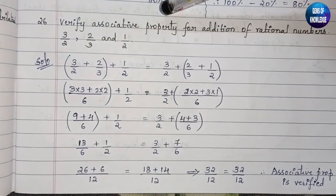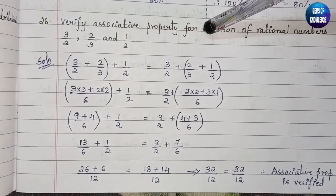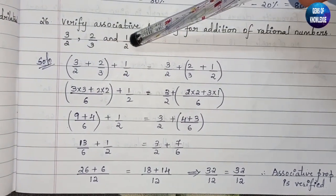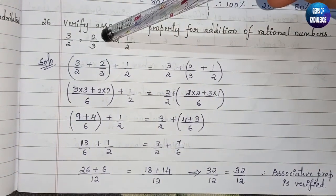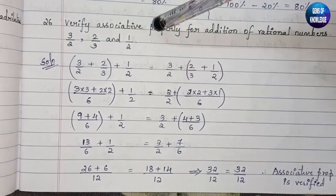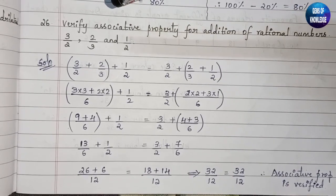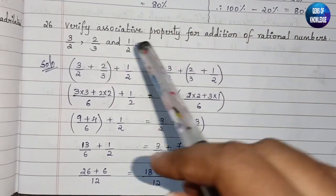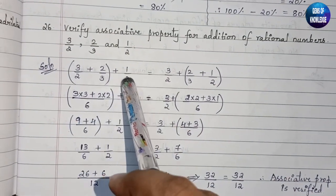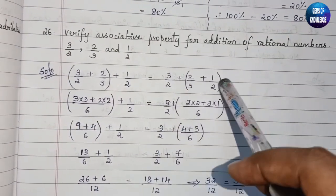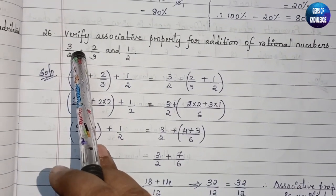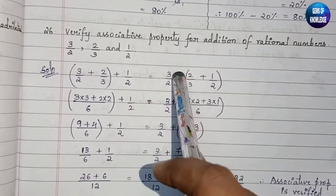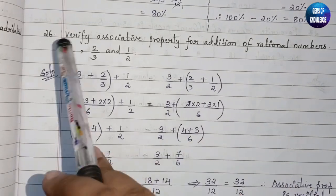The next question says: verify the associative property for addition of rational numbers 3/2, 2/3, and 1/2. Using these numbers we have to verify whether the associative property holds. The associative property rule is: (a + b) + c = a + (b + c). The only change is the bracket placement — first for (a + b), then for (b + c).